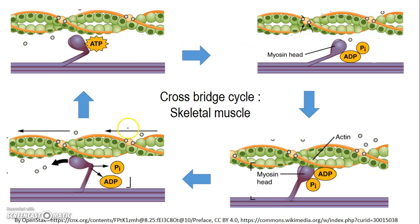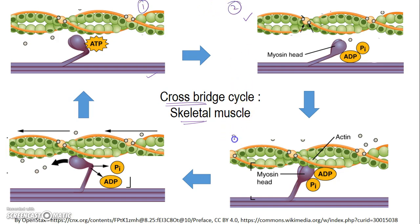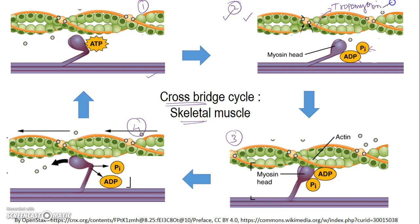We will start with skeletal muscle cross-bridge cycling. These are the various steps of the cross-bridge cycle — continuous contraction and relaxation. In a skeletal muscle, this process starts at point 1, 2, 3, and 4. Point 2 is where the skeletal muscle cycle starts. The myosin head is bound to ADP and inorganic phosphate, in a cocked state, ready to bind to the actin binding site. But at the resting state, it is not able to bind because of the protein tropomyosin, which prevents actin and myosin from coming together.